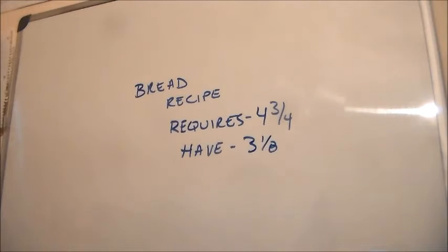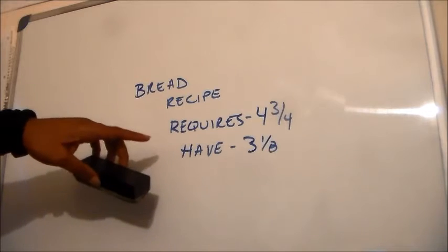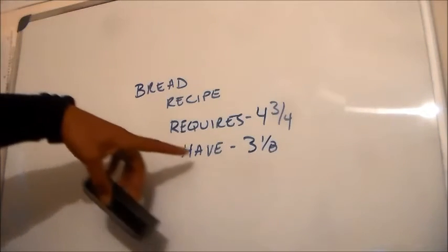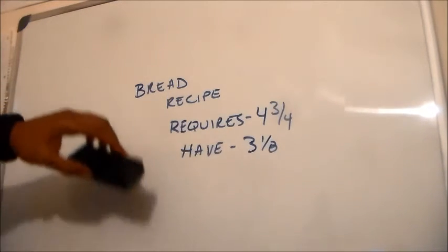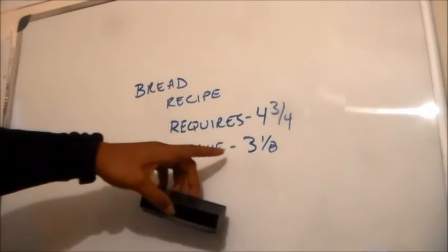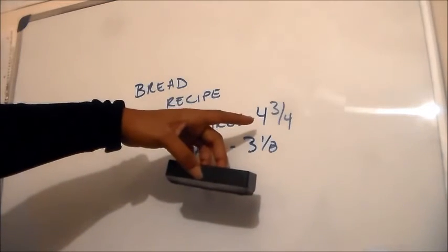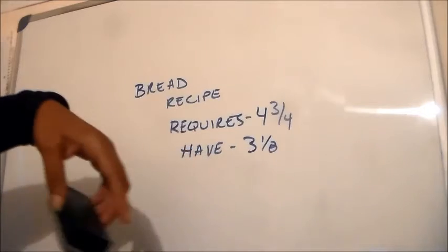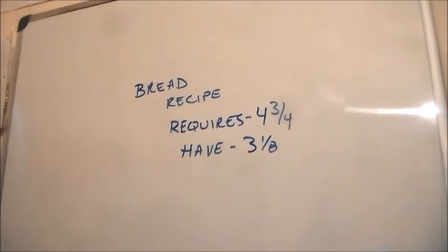Okay. This is a... Well, I won't call it simple because some of you guys have problems with fractions. So I won't call it simple. But I have a surefire way of solving this. Okay, so we require four and three quarters, but we only have three and one eighths. We are going to have to subtract three and one eighths from four and three quarters. And we're going to see how much more flour we need.